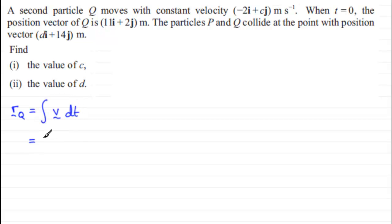And that means that we need to integrate the velocity vector, which is minus 2i plus cj. So minus 2i plus cj, and we integrate that with respect to time. And if we integrate that, we're going to get for the first component minus 2ti, and then for the second component it will be plus ct in the j direction, and there will also be a constant of integration which I'll call plus c.